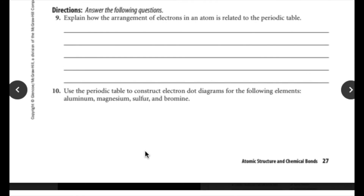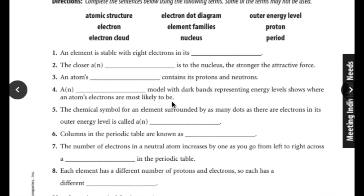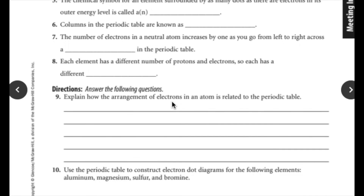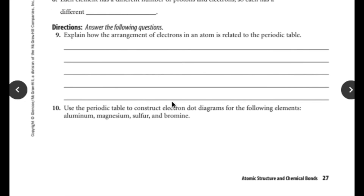At number 10, you'll be able to come back to this — you don't have to do number 10 today. We will practice how to write out electron dot diagrams for the elements aluminum, magnesium, sulfur, and bromide. So today, just finish numbers 1 through 9. We'll come back to number 10 once we finish part 2 of this lesson.